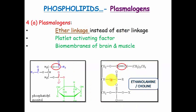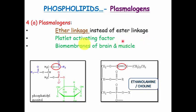The second part is plasmalogen, which is again a variant of glycerophospholipid. The only difference is that glycerophospholipids contain an ester linkage with the fatty acid, whereas in plasmalogen you find an ether linkage. They are the most important platelet-activating factors, so they are useful for coagulation, and are also used in the synthesis of biomembranes of the brain and muscles.